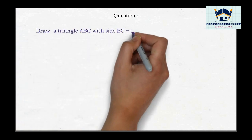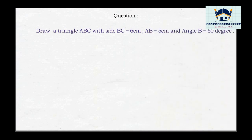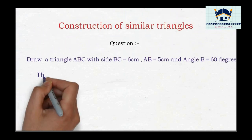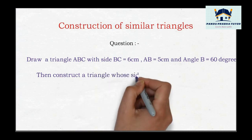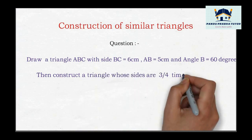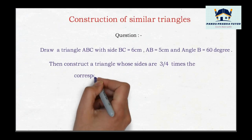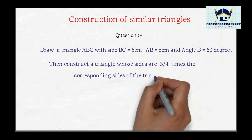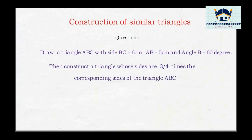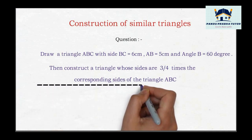Draw a triangle ABC with side BC equal to 6cm, AB equal to 5cm, and angle B equal to 60 degrees. Then construct a triangle whose sides are 3/4 times the corresponding sides of triangle ABC. This is the question. Observe carefully.